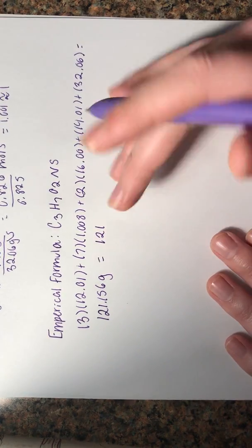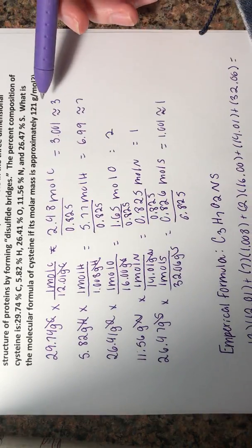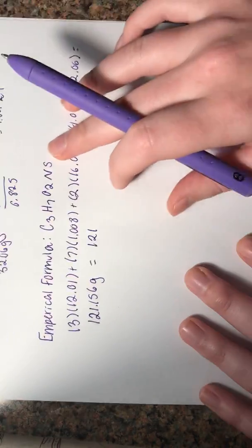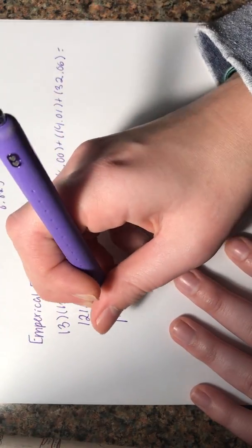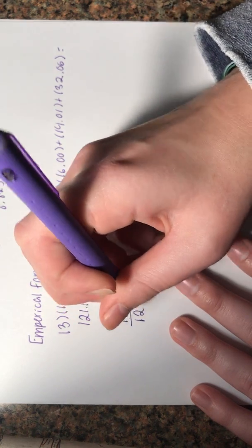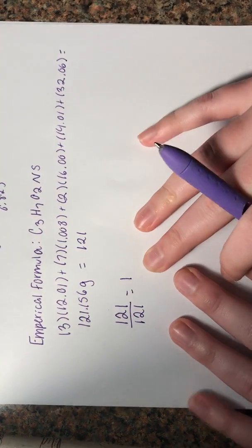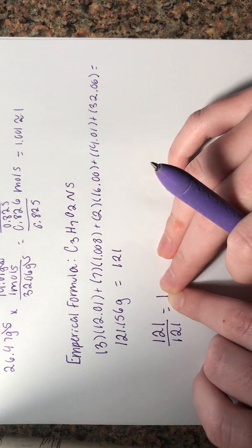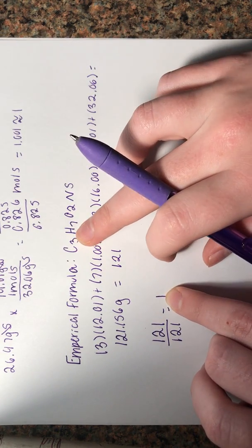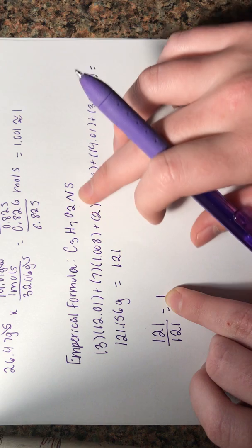After we have this number, we will divide it by the number that's given for our molecular formula. So we'll have 121 divided by 121, which will equal 1.